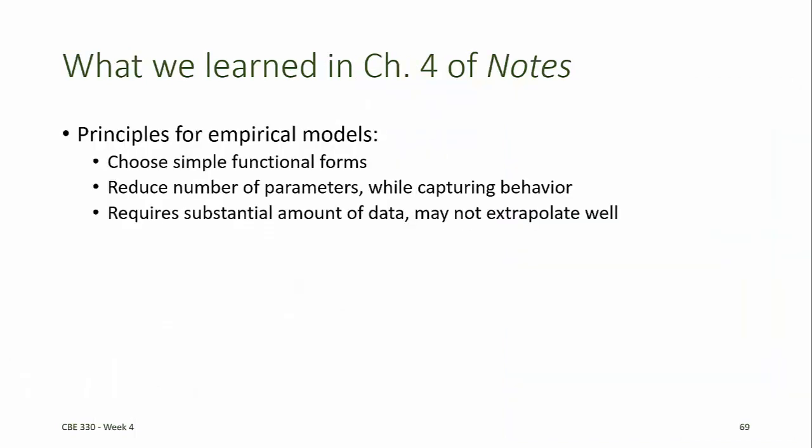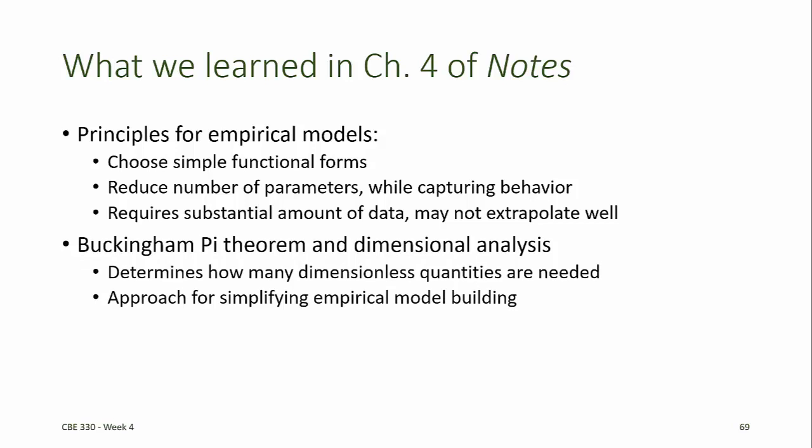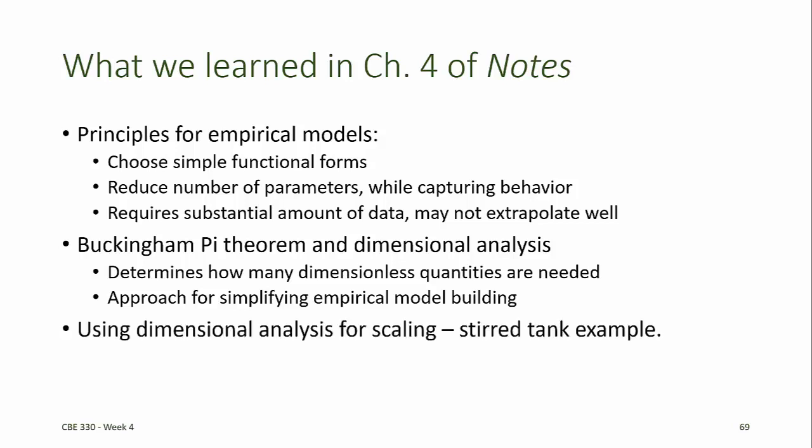In chapter 4 of the notes, we discussed principles for developing empirical models: choose simple functional forms, reduce the number of parameters as much as possible while still capturing system behavior, and recognize that a substantial amount of data may be needed. Remember that empirical models should not be used to extrapolate. We introduced the Buckingham Pi theorem as an important result from dimensional analysis — it determines how many dimensionless quantities are needed to represent a relationship among dimensional quantities, simplifying empirical model building by reducing the total number of variables required. We can also use dimensional analysis for scaling, as demonstrated with the stirred tank example.